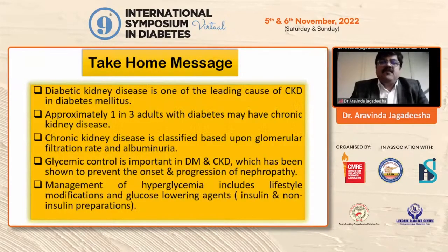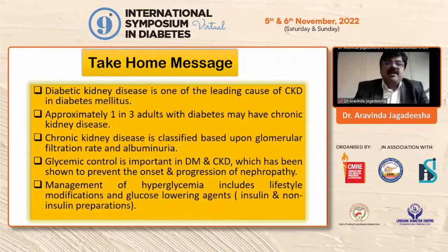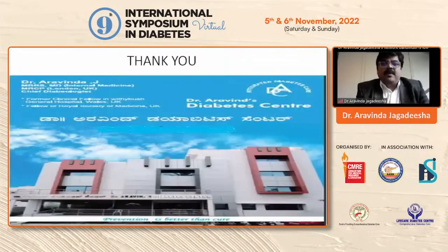The take-home messages from today: diabetic kidney disease is one of the leading causes of CKD in diabetes mellitus. Approximately one in three adults with diabetes may have chronic kidney disease. CKD is classified based on glomerular filtration rate and albuminuria. Glycemic control is important in diabetes and CKD and has been shown to prevent the onset and progression of nephropathy. Management of hyperglycemia includes lifestyle modification and glucose-lowering agents, both insulin and non-insulin preparations. Thank you for your patient hearing, and I thank Dr. Rajiv Chawla for this opportunity.